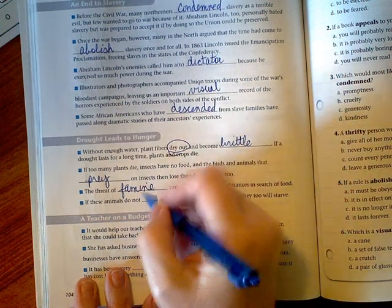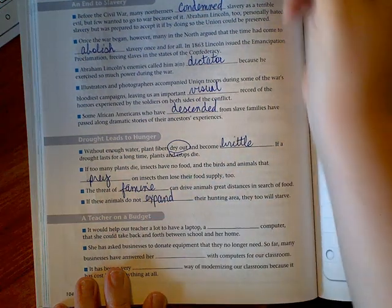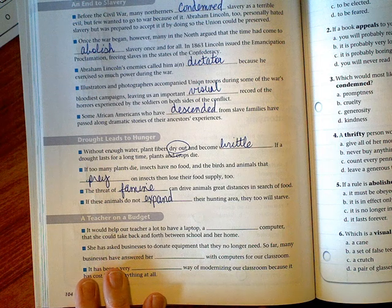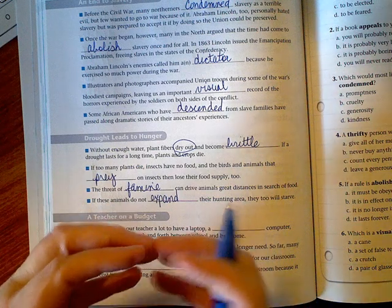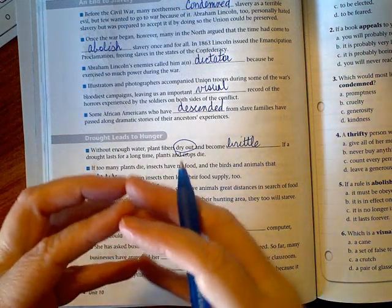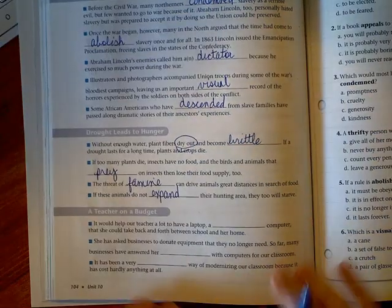If these animals do not expand their hunting area, they too will starve. So if they're just in this one tiny area, they may not be able to find enough food, so their hunting area has to expand or get bigger and bigger in order to find food.